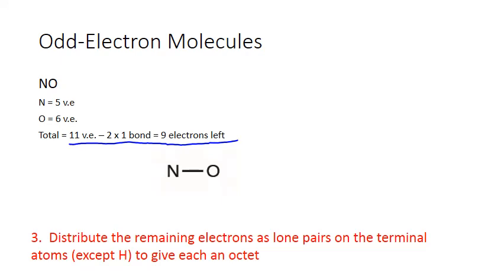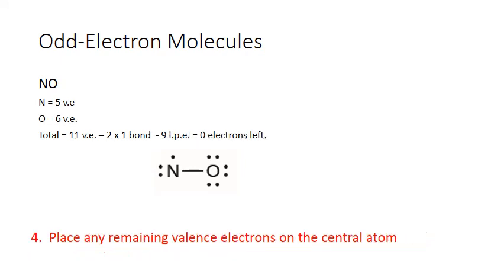There's no way we're going to be able to give both atoms a full octet. Since oxygen is more electronegative than nitrogen, we'll give it the full amount, and we'll let nitrogen be the one that's electron deficient. Our fourth rule — place any remaining valence electrons in the central atom — does not apply here, as we now have zero electrons left to place.